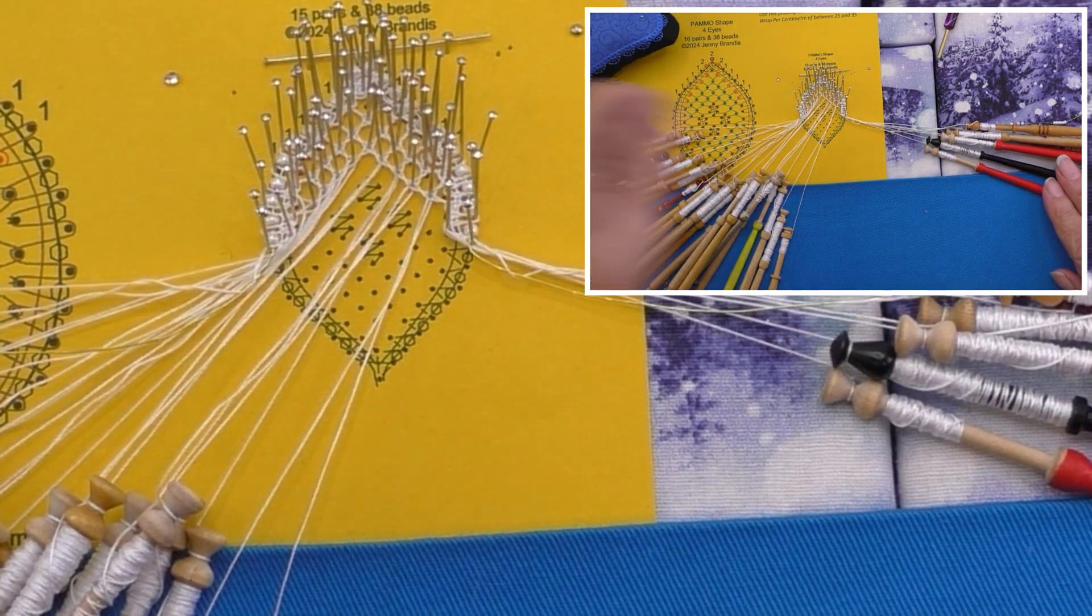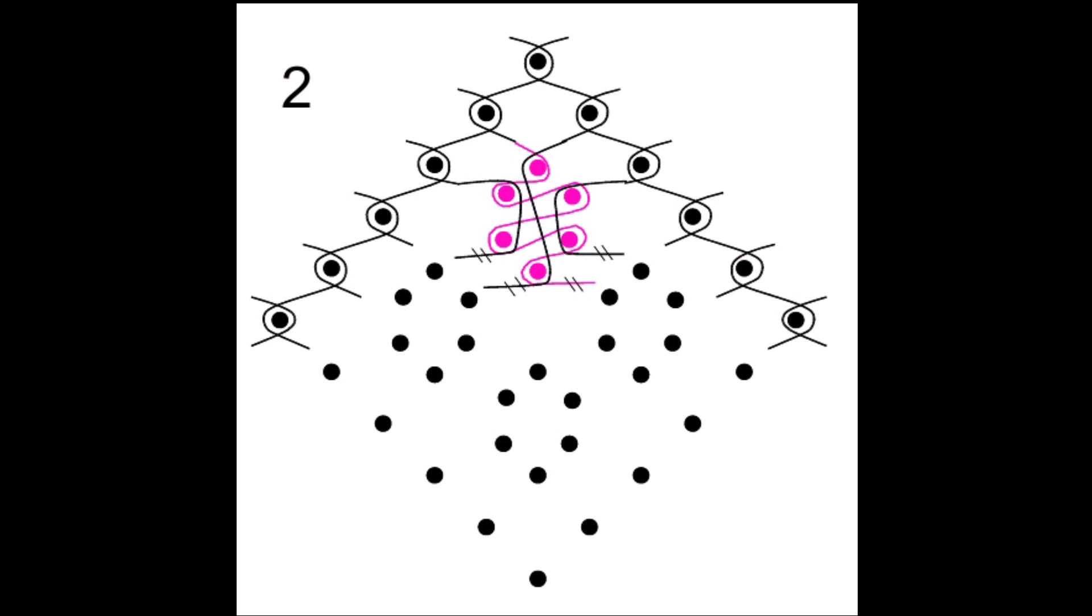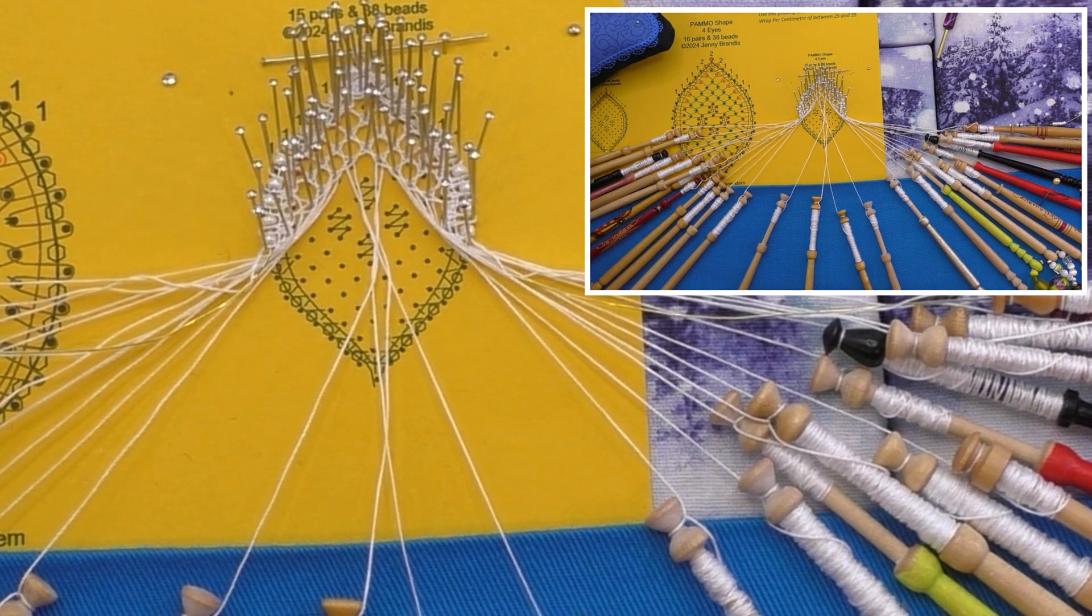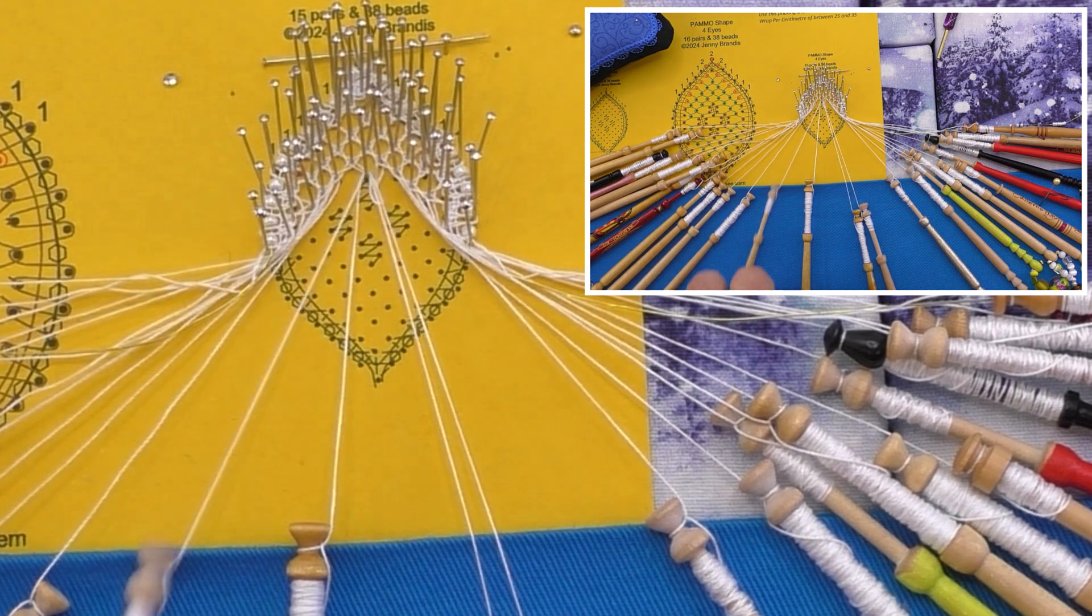Mirror this on the right side. Start the top bud with cloth stitch, pin, cloth stitch.